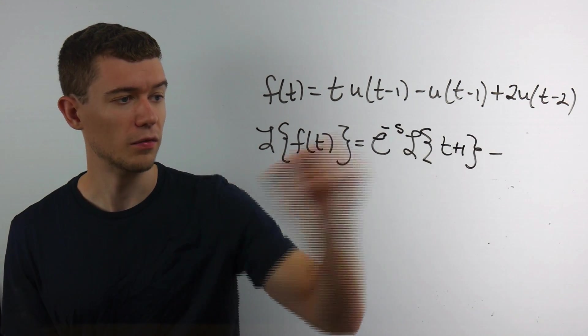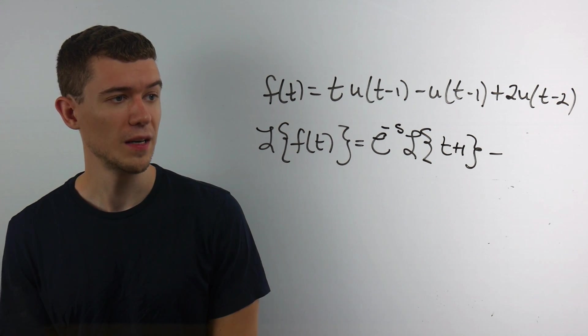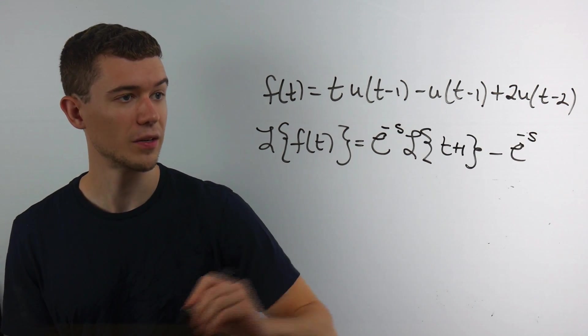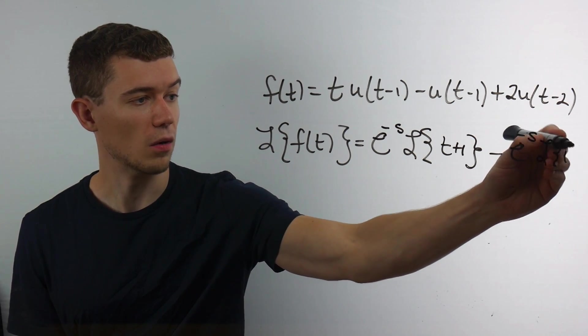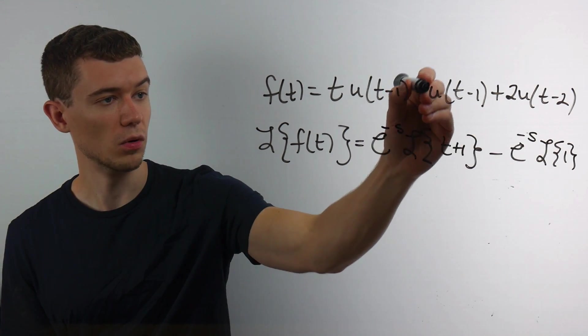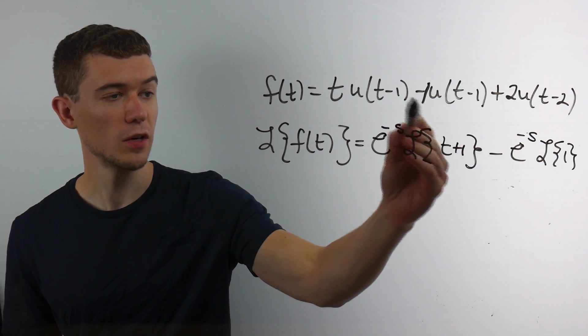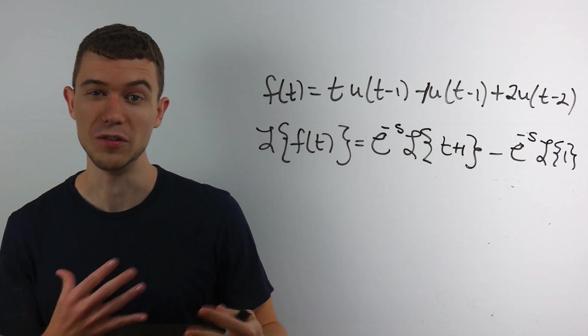Here, the Laplace transform of minus u of t minus 1. Again, same deal. We'll have an e to the minus s come out, times the Laplace transform of 1. There's an invisible 1 here. And there's nowhere to shift the 1 because there's no t. There's no variable.